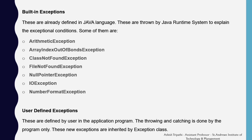Built-in exceptions are already defined in the Java language and are thrown by the Java runtime system to explain exceptional conditions. Some of them are: ArithmeticException, ArrayIndexOutOfBoundsException, ClassNotFoundException, FileNotFoundException, NullPointerException, IOException, and NumberFormatException. User-defined exceptions are defined by the user in the application program; the throwing and catching is done by the program itself. These new exceptions are inherited from the exception class, so whenever we want to make our own exception, we have to make an instance of the exception class.